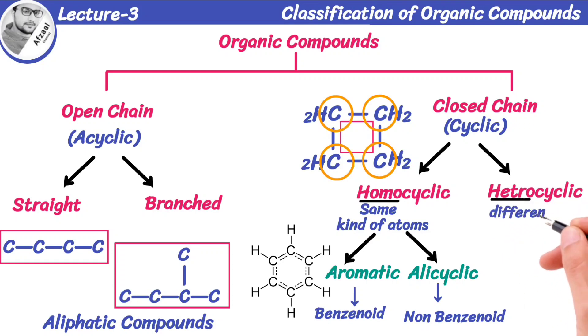On the other hand, hetero means different, and such type of compounds contain rings that are made up of different kind of atoms. Like in this compound, the sulfur is present with carbon atoms to make a cyclic structure. Such types of compounds are known as heterocyclic.